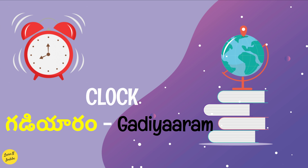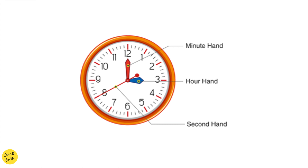Clock in Telugu is known as Gadi Aaram. Usually in any clock we find three pointed indicators known as hands. The smaller one indicates an hour, the medium hand indicates a minute, and the bigger one indicates seconds.